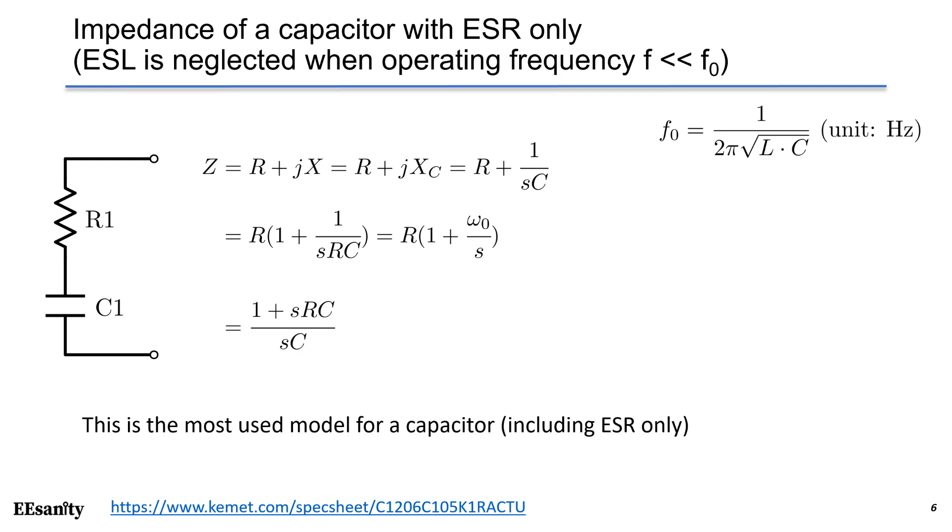By using some algebra, we can simplify the equation as a pole and zero. The impedance can be simplified as 1 inverted zero at ω0, or you can put it in a way that shows 1 origin pole and 1 zero. Again, considering ESR only is the most used model for a capacitor.